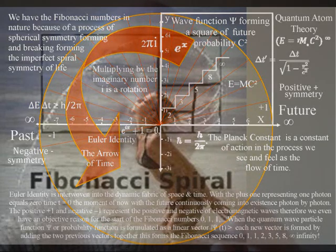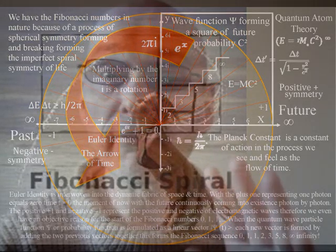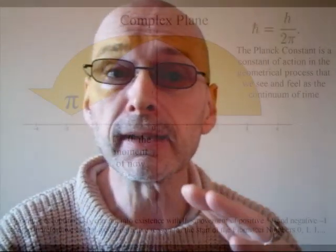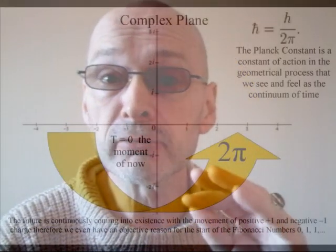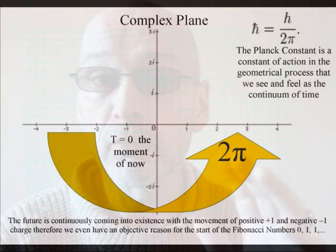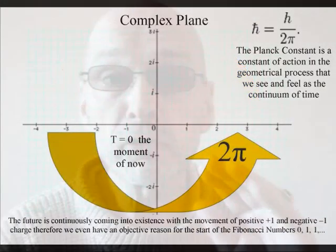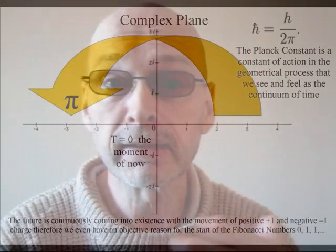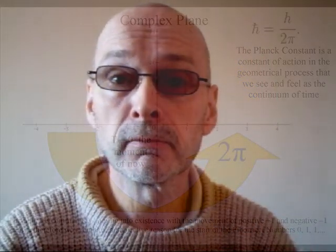This theory even has an objective reason for the start of the Fibonacci numbers 0, 1, 1. If we think of the zero in the centre of the complex plane as t equals zero, the moment of now, with the future continuously coming into existence, photon by photon, the positive one and negative one represents positive and negative charge, with the flow of electromagnetic waves.